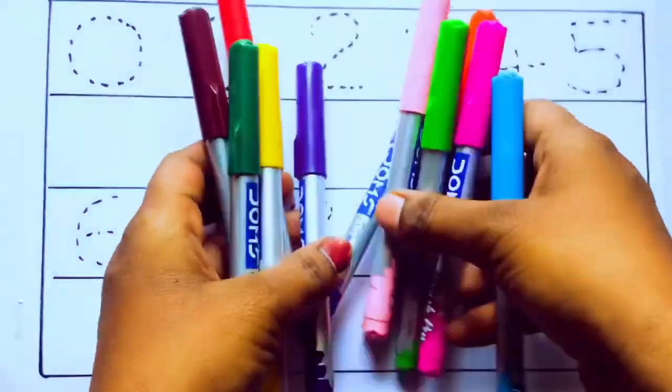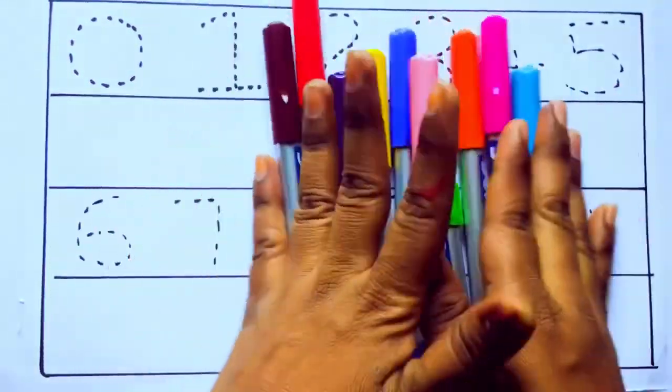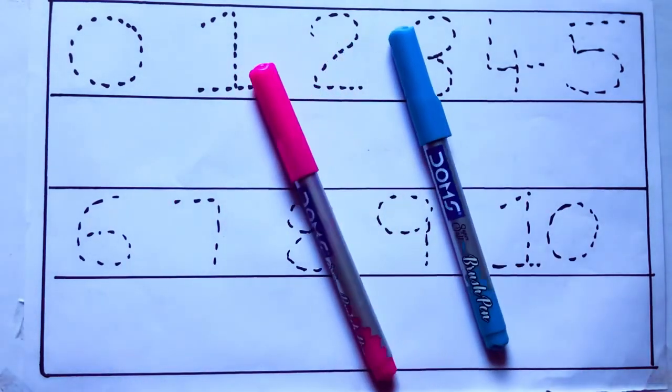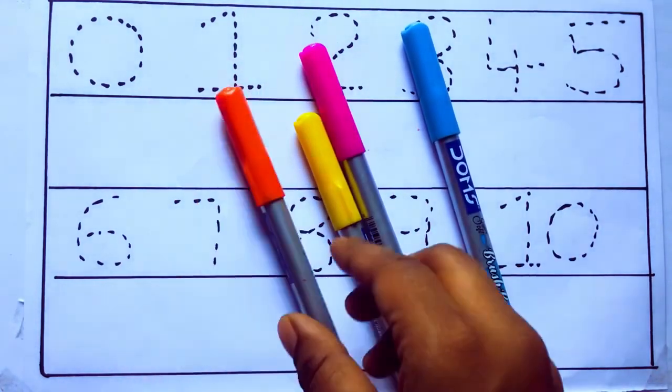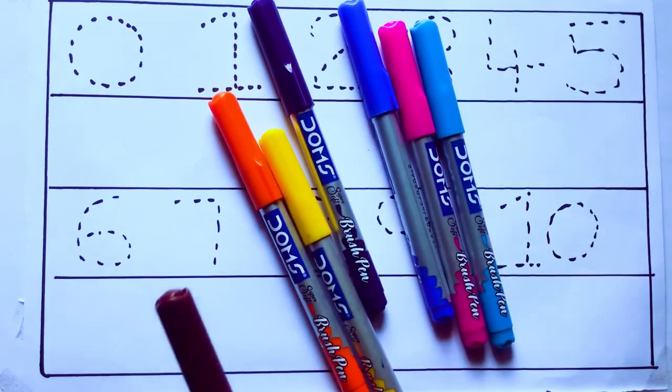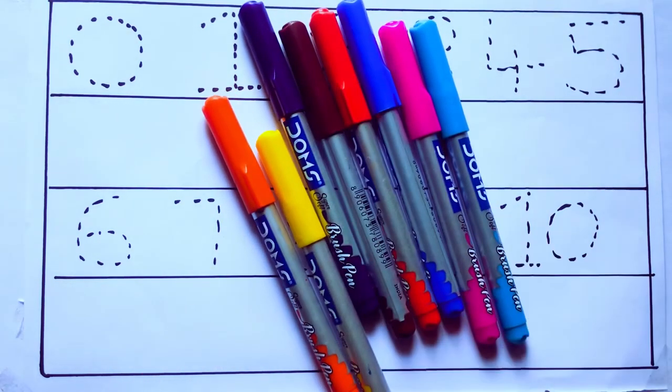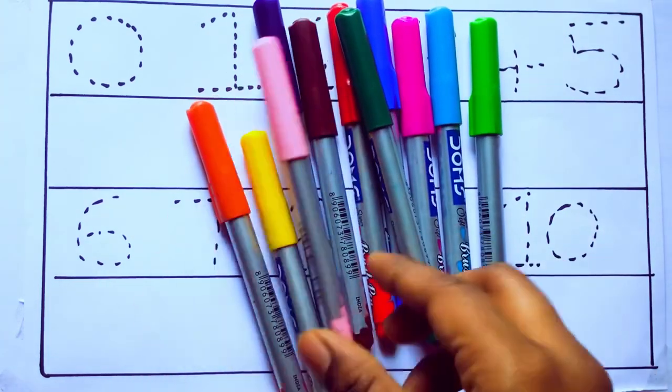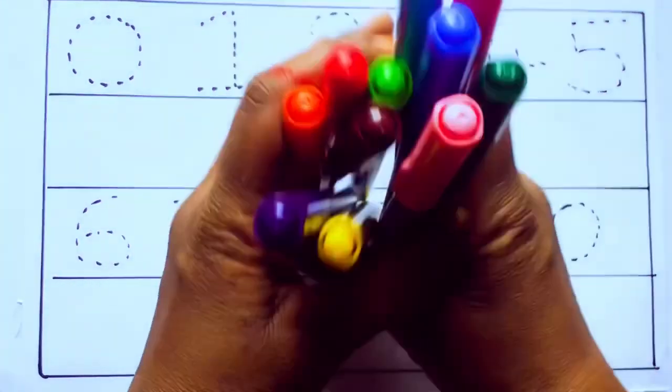Let's learn some colors. These are all the color pencils. Let's learn the names: sky blue color, pink color, yellow color, orange color, violet color, blue color, brown color, red color, and green color.